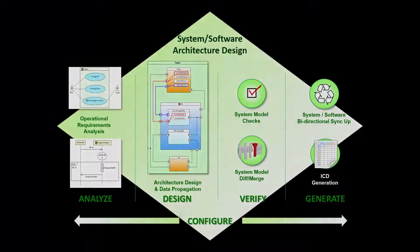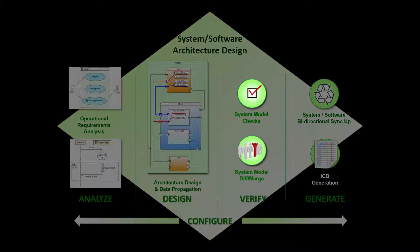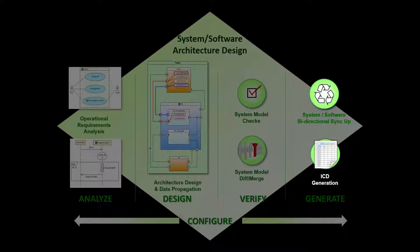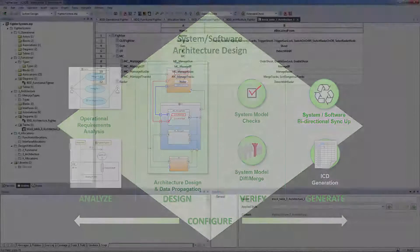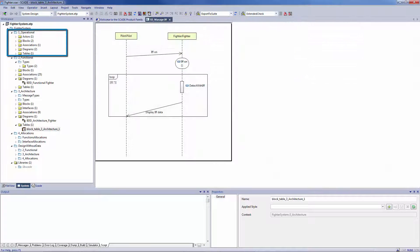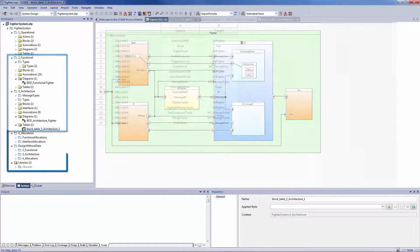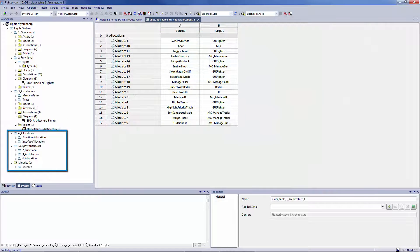The SCADE System tool enables the analysis and design of a system, its verification, and then generates its documentation and data tables. Its editor is user-friendly and intuitive. It supports operational requirements analysis, functional and physical architecture decomposition, and allocation of functions to components.